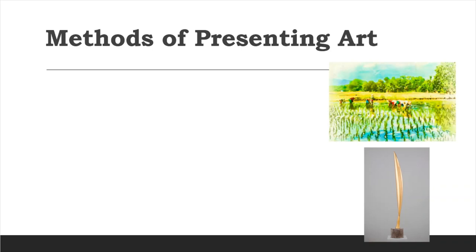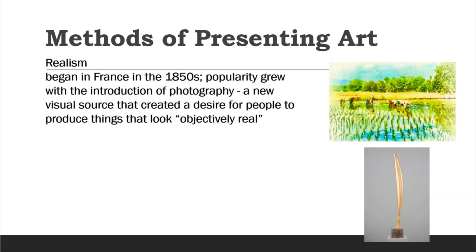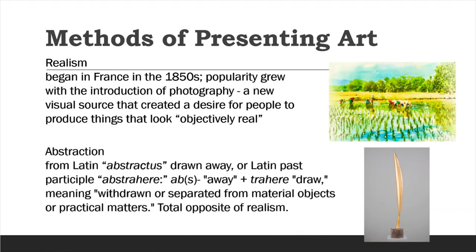These are the methods of presenting art. Realism aims to produce artworks that are objectively real, just like a photograph or picture. Abstraction is the total opposite of realism. Can you identify the subject of the artwork at the right? Perhaps you think it is a ball pen, but no — it's a bird. Yes, it's a bird, based on the title 'Bird in Paradise.'